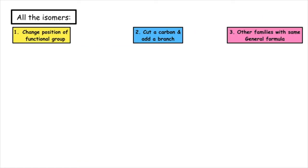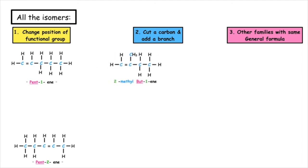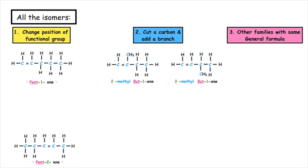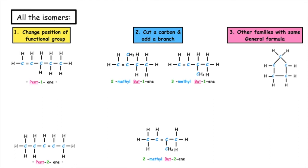The rules to think about when you're wanting to draw isomers: firstly, change the position of the functional group within the chain. Secondly, cut a carbon, add a branch, then move the branch along. The third thing to focus on is looking at other families which have the same general formula. Alkenes have the general formula CnH2n, and so do the cycloalkanes, so we could also draw cyclopentane.